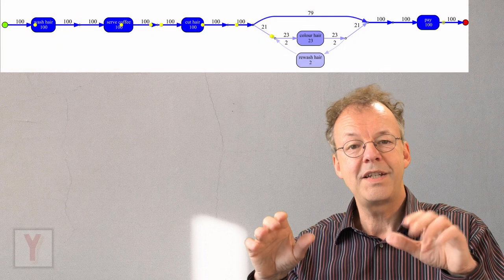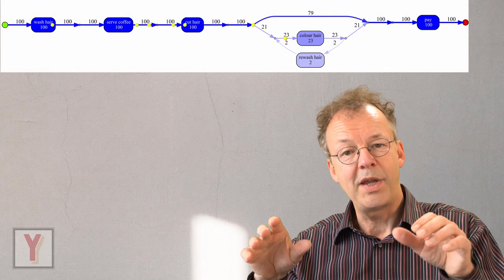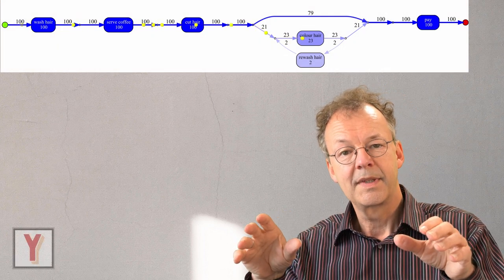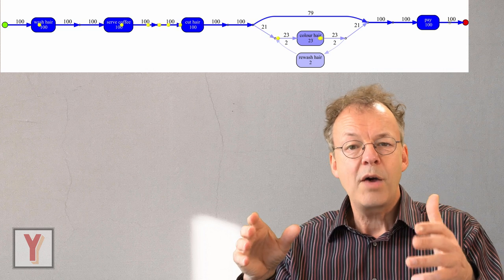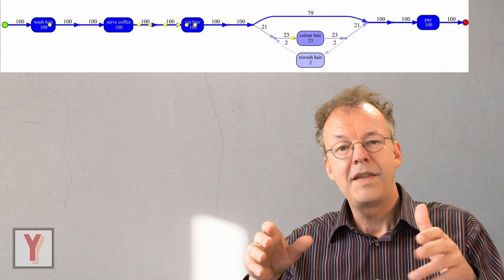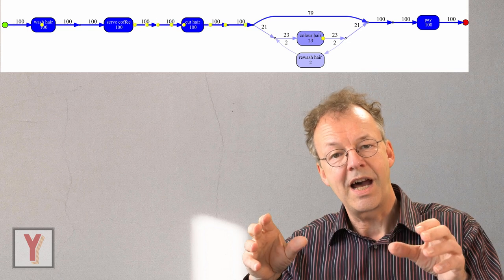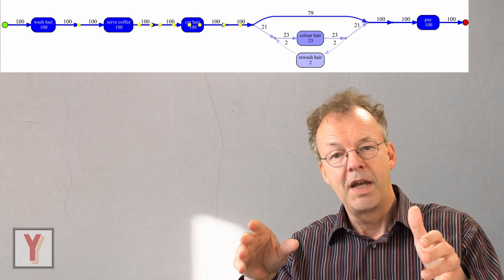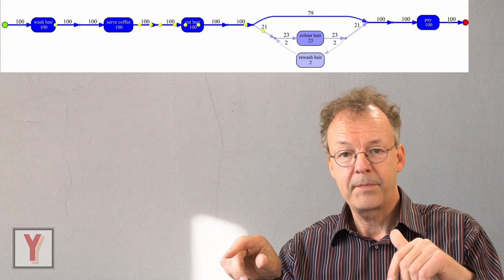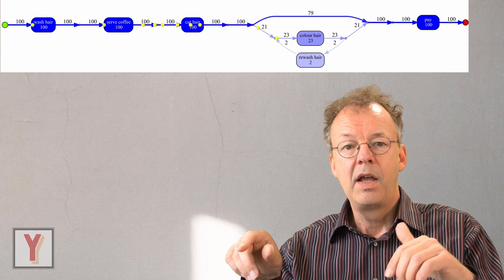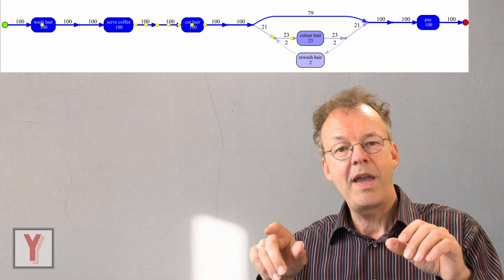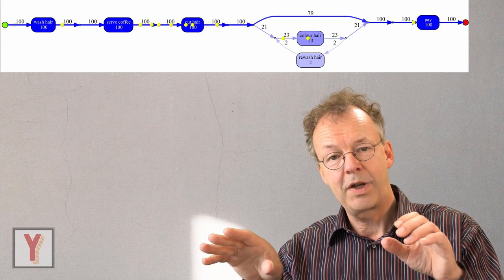Let's verify it again using the animation in PROM. You can now see that the only beads that move slowly after the task cut hair are the ones that go to color hair. Those that go directly to pay are moving out very quickly.